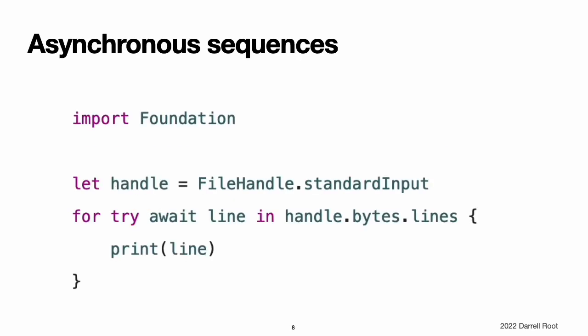Asynchronous sequences. The listPhotosInGallery function in the previous section asynchronously returns the whole array at once after all of the array's elements are ready. Another approach is to wait for one element of this collection at a time using an asynchronous sequence. Instead of using an ordinary for-in loop, this example writes for with await after it. Like when you call an asynchronous function or method, writing await indicates a possible suspension point. A for-await-in loop potentially suspends execution at the beginning of each iteration when it is waiting for the next element to be available. You can use your own types in a for-await-in loop by adding conformance to the AsyncSequence protocol.